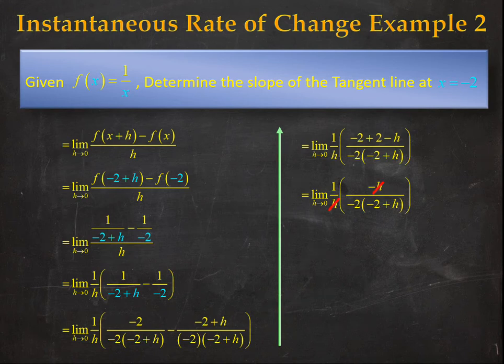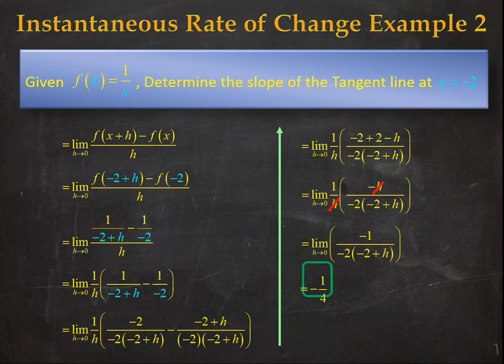Now we simply can allow h to go to 0. So if we allow h to go to 0 we get minus 1 over minus 2 times minus 2 and algebraically that simplifies to minus 1 quarter.